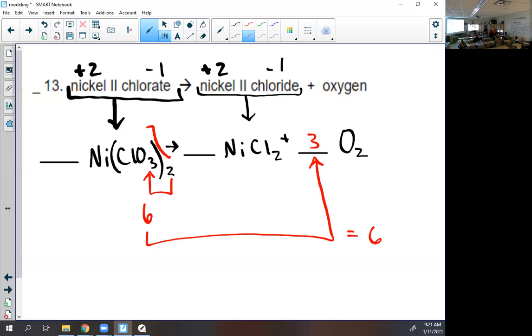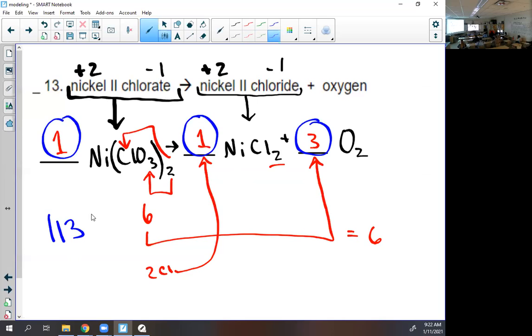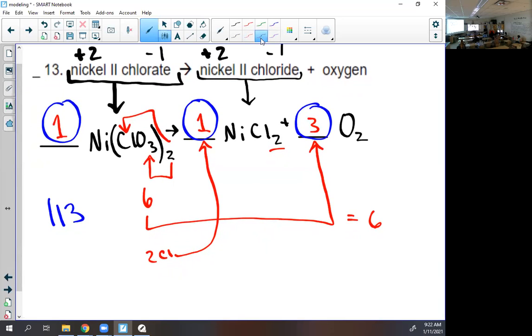The next thing you should check are the chlorines. There are two times one, which is just two chlorines. So what do I need here to make two chlorines? A one and a one. On the test, you'll do all this work, but you will just type in these numbers. This answer on the exam would be 113. One, one, three. Sometimes people accidentally double everything and they get 2, 2, 6. If you do that, please reduce to 1, 1, 3. I usually have both answers acceptable, but sometimes I don't.